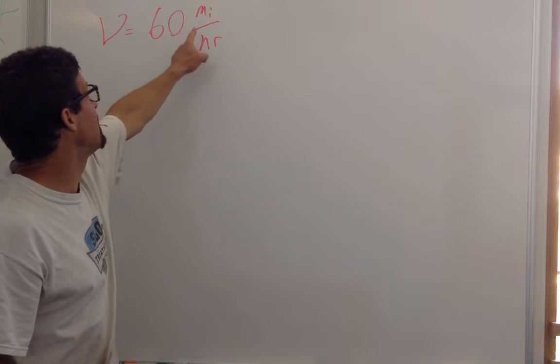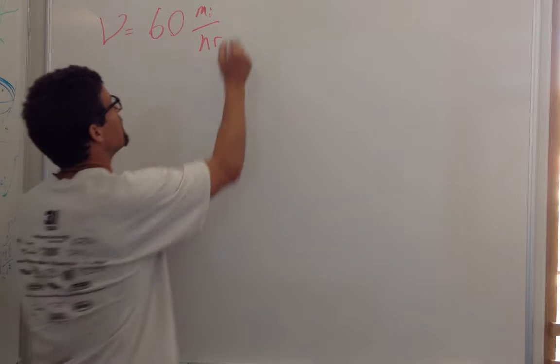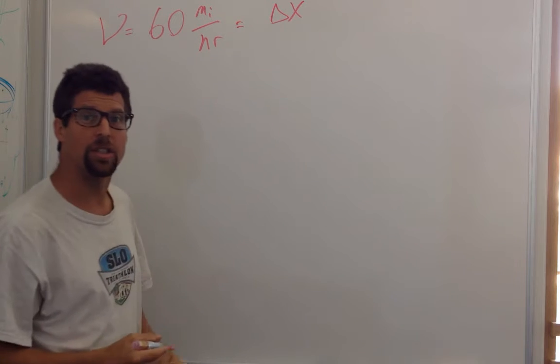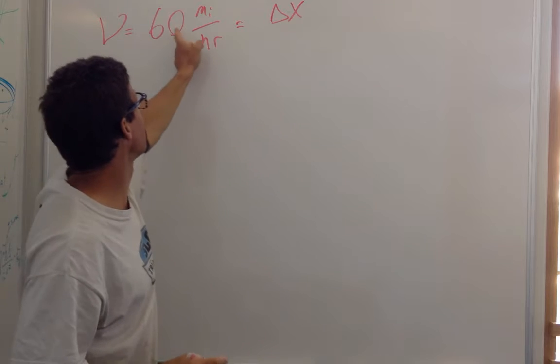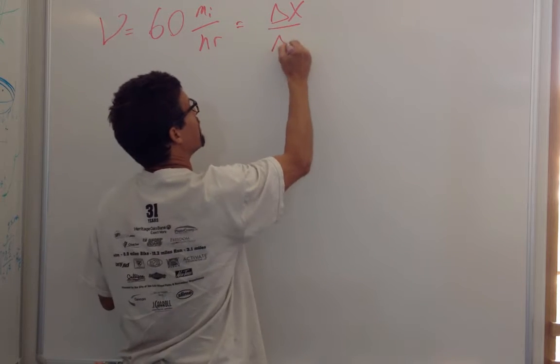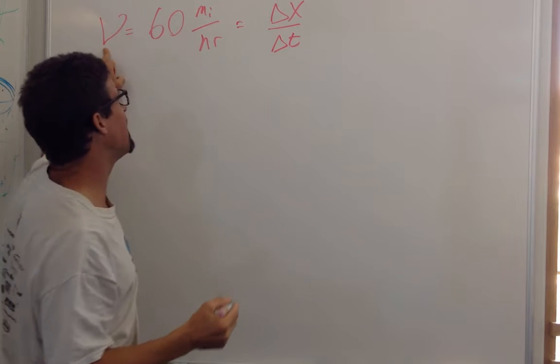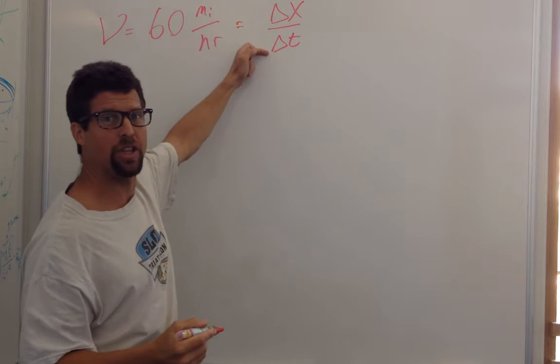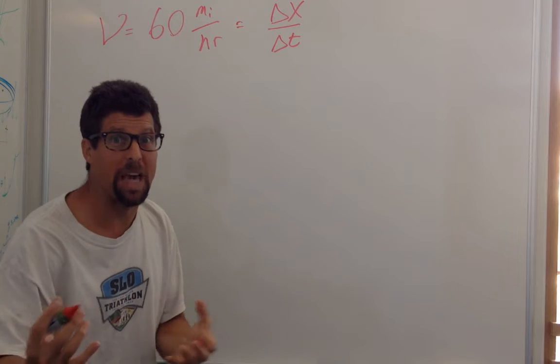What does that mean? That means you move a distance of 60 miles, a distance delta x, or change in displacement. You move a distance of 60 miles every hour unit of time. So we know that speed is the change in distance over change in time, and if we were to do some calculus,